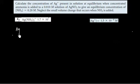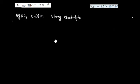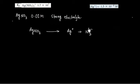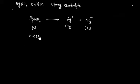We have been given a solution of AgNO₃ that is 0.01 M. AgNO₃ will be treated as a strong electrolyte, so it will dissociate completely. In solution it will dissociate into Ag⁺ plus NO₃⁻. This gives 0.01 M of Ag⁺ and 0.01 M of NO₃⁻.